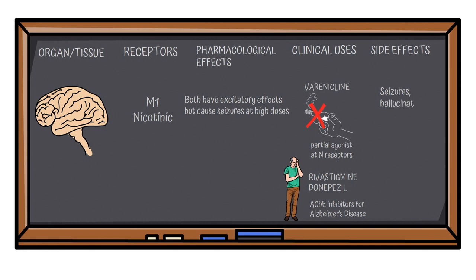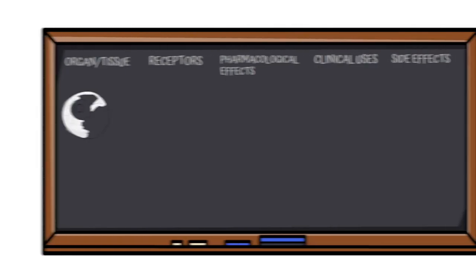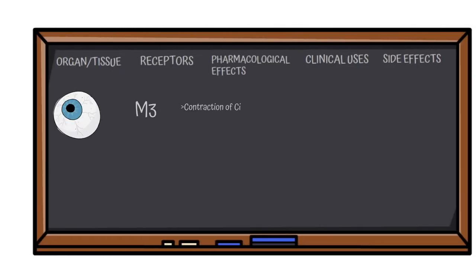At high concentration, these drugs can cause seizures or hallucinations. In the eye, M3 receptors are present which cause contraction of the ciliary muscle and circular muscle of the iris. Miosis occurs, accommodation reflex occurs, and focus for near vision occurs.